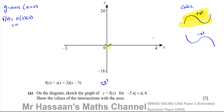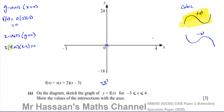So it crosses through the origin — that's where it crosses both the y-axis and the x-axis. To find all x-axis crossings, we set y = 0: x(x+2)(x-3) = 0. Either x = 0, or x + 2 = 0 giving x = -2, or x - 3 = 0 giving x = 3.